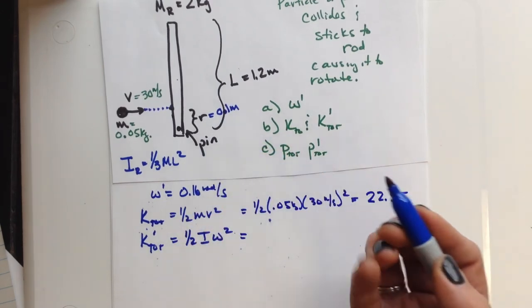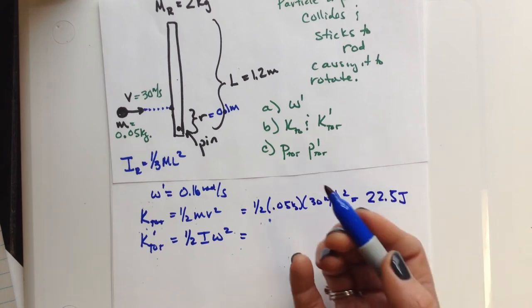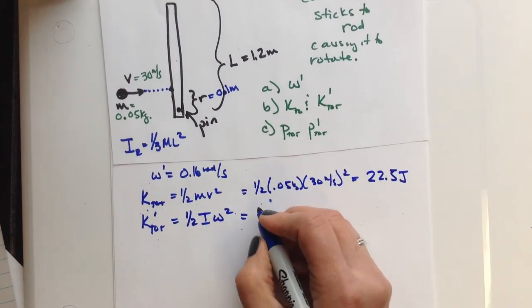Now here, we're going to expect it to be less, right, because some of that energy must be lost in the collision. So again, 1 half,